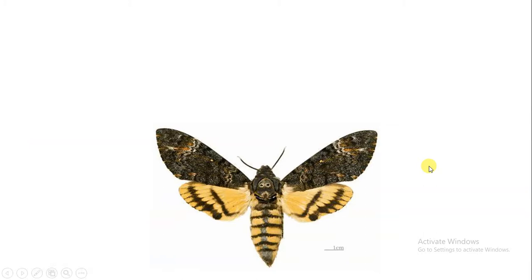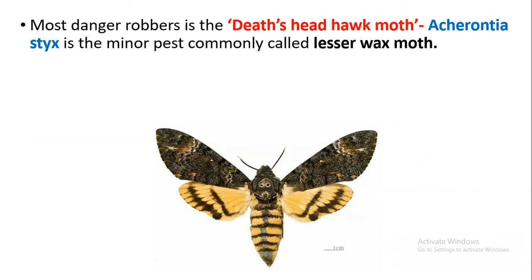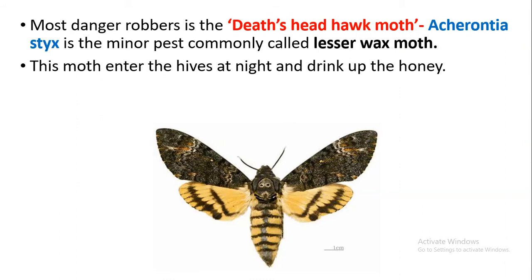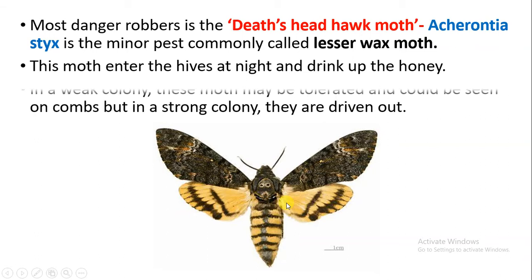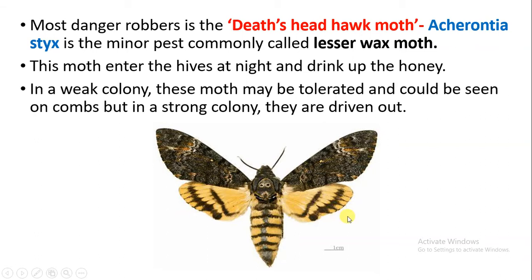The first moth is Acherontia, and its common name is the dead head hawk moth, because in the thorax region you can see the face of a skull. It is one of the minor pests, also called the lesser wax moth. They enter the hive during the night time and drink the honey. Whenever there is a weak colony, the moth enters and drinks the honey, but in a strong colony, the bees easily drive out Acherontia and protect the hive.